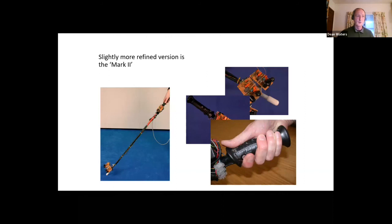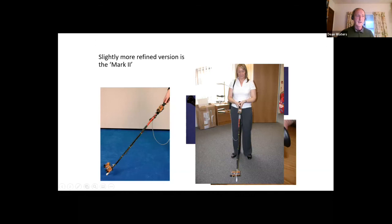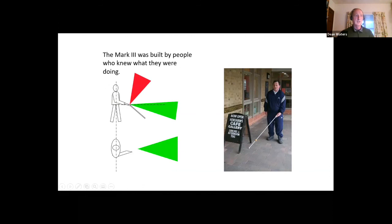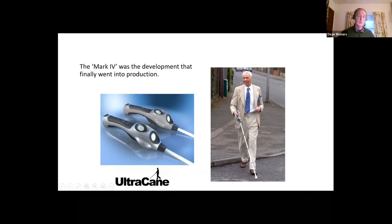The mark three was the prototype that we went out for long-term testing, and that's actually built by people who really genuinely knew what they were doing. This is David, one of our testers here. Again, we've got three sensors looking to the sides and one looking up. That was a great success. We took lots of feedback, and eventually the mark four is the one which went into production and is now still in production as well. So if you do see somebody who's visually impaired walking with one of these, fundamentally it was inspired by bats.